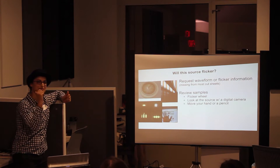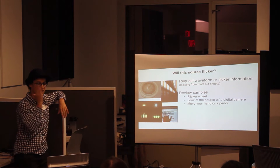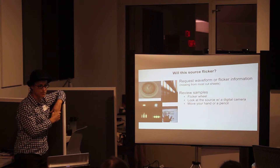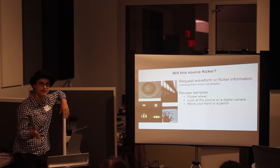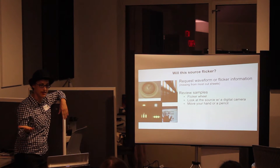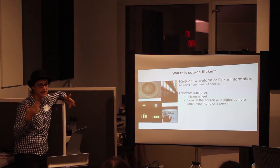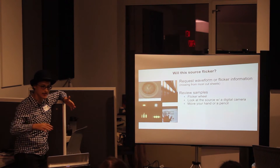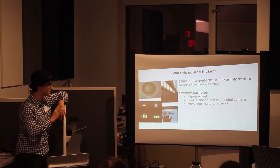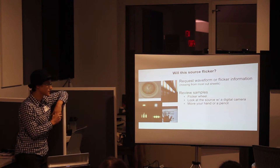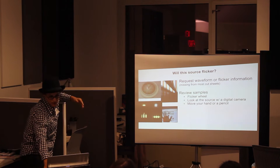You can also take your phone and see if you get bands across your screen, or simply move your hand under the fixture. If it exhibits stroboscopic effect, the movement of your hand will look choppy rather than smooth.